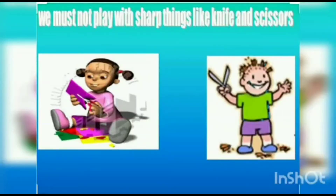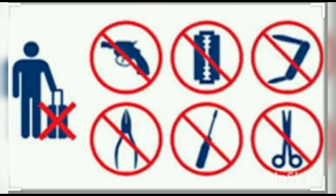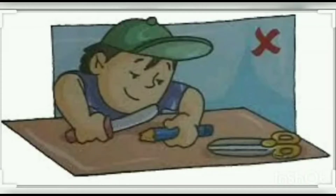Let us see some common reasons for accidents and what we should do to avoid them. Accidents can happen when you are careless while using sharp objects such as knives, razors, nails, scissors, or glass objects. You must learn to use them correctly and only in the presence of an adult.